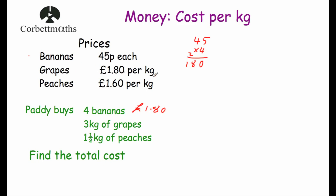For grapes: they cost £1.80 per kilogram and we want three kilograms. We multiply 180 pence by three: three times zero is zero; three times eight is 24, put the four down, carry the two; three times one is three, add two is five. So three kilograms of grapes costs £5.40.